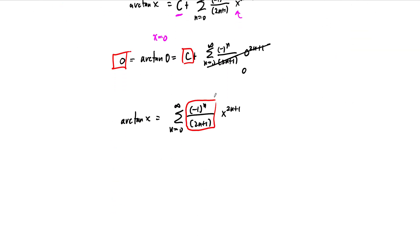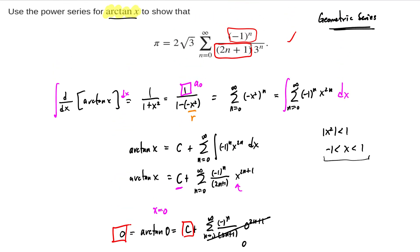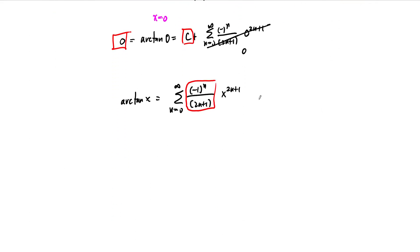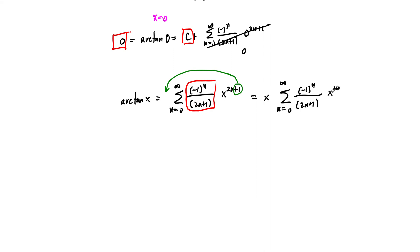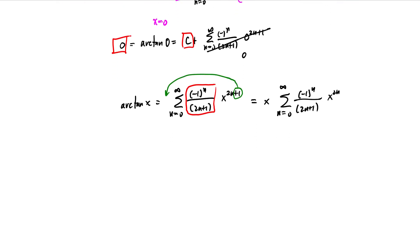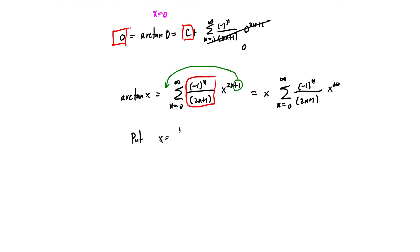Continuing to compare, we see 3 to the power n in the denominator, and also a root 3 out front — those are related. We can pull out one x from x to the 2n plus 1 and write arctan x as x times the sum of negative 1 to the n over 2n plus 1 times x to the 2n. To make x to the 2n produce 3 to the n in the denominator, we set x equal to 1 over root 3, which is the same as root 3 over 3.